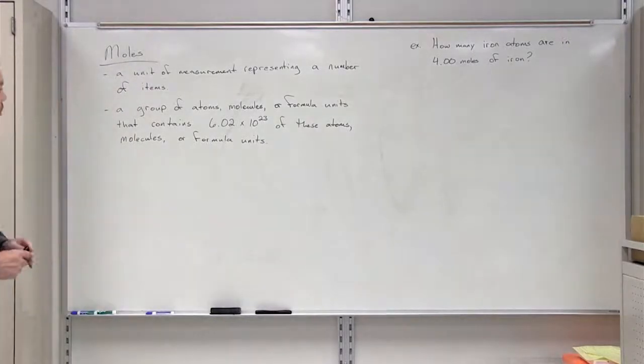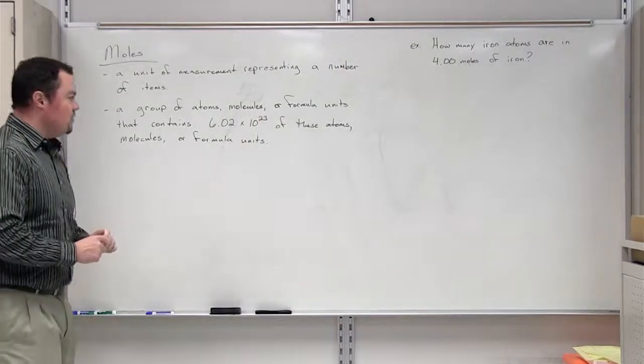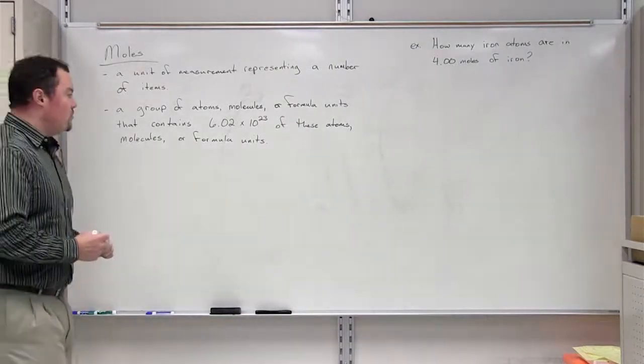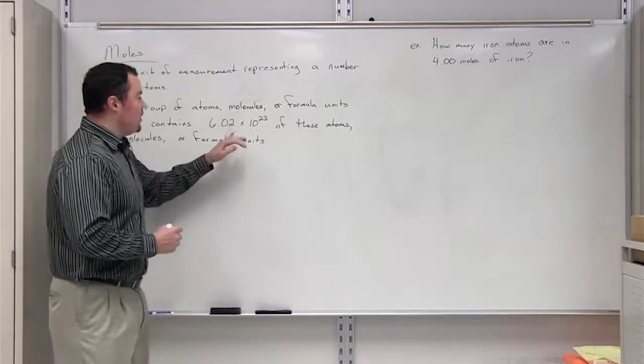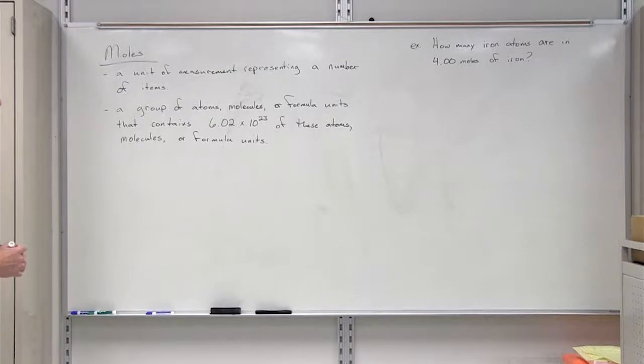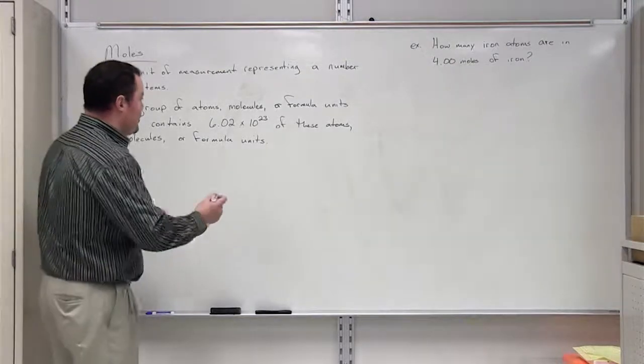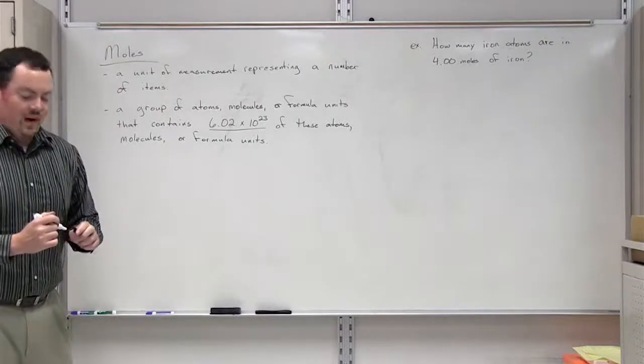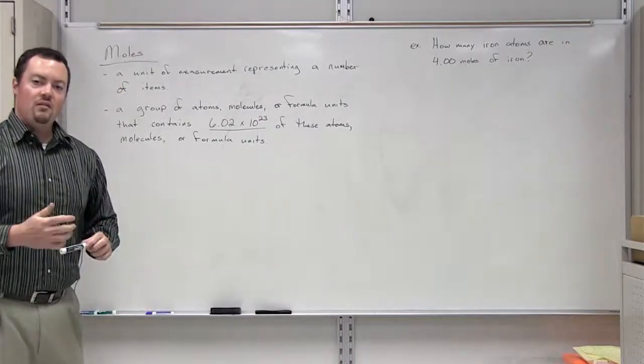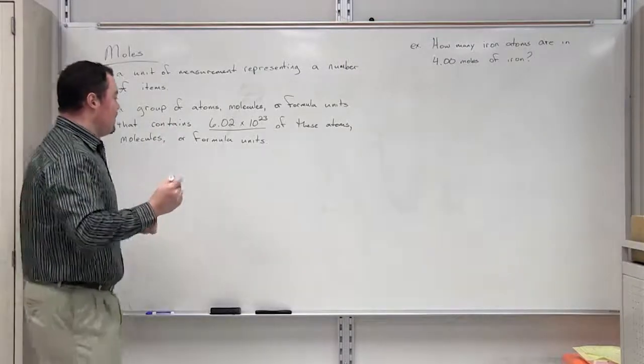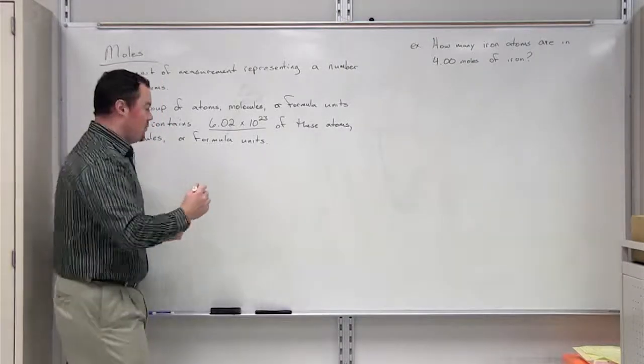Another definition for the term moles is a group of atoms, molecules, or formula units that contains 6.02 times 10 to the 23rd power of these atoms, molecules, or formula units. So this number here is 6.02 times 10 to the 23rd power. This is the important value in this term of moles. This value is called Avogadro's number.